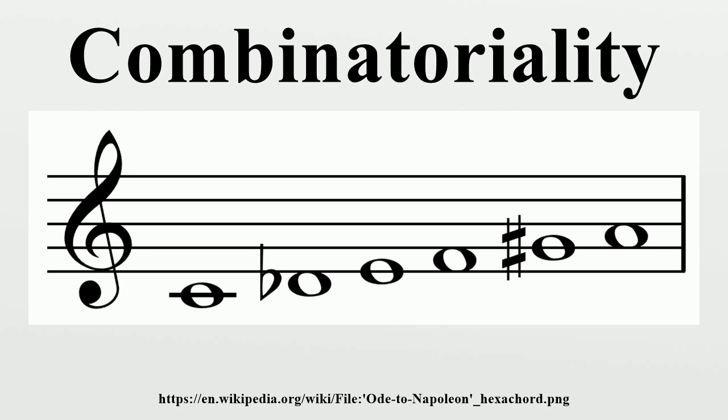There are four main types of combinatoriality. A hexachord may be prime combinatorial, retrograde combinatorial, inversional combinatorial, or retrograde inversional combinatorial, and thus semi-combinatorial or all-combinatorial.